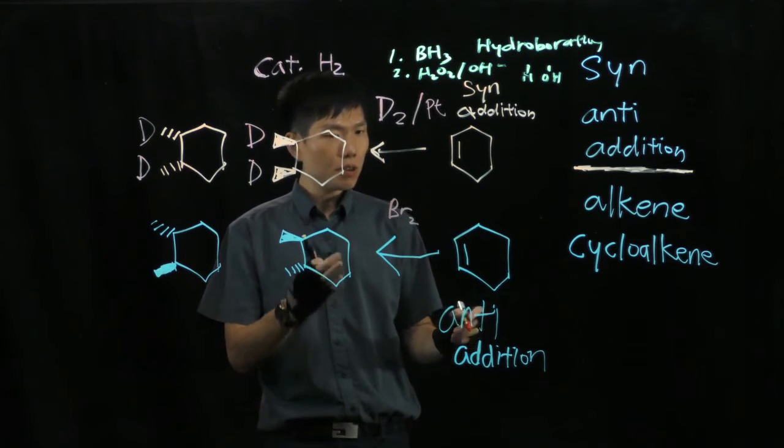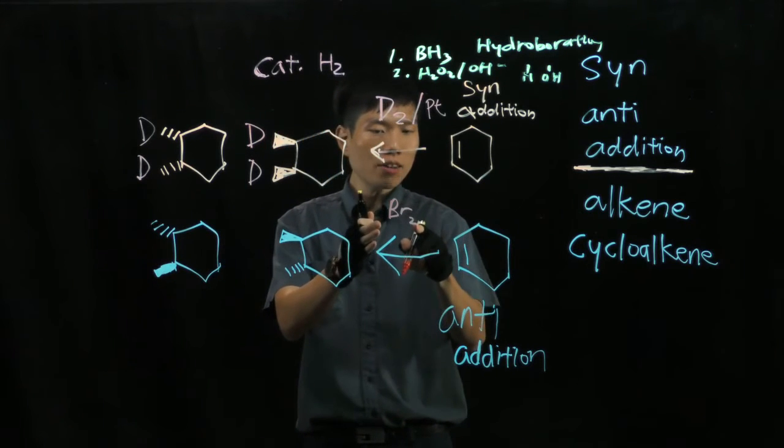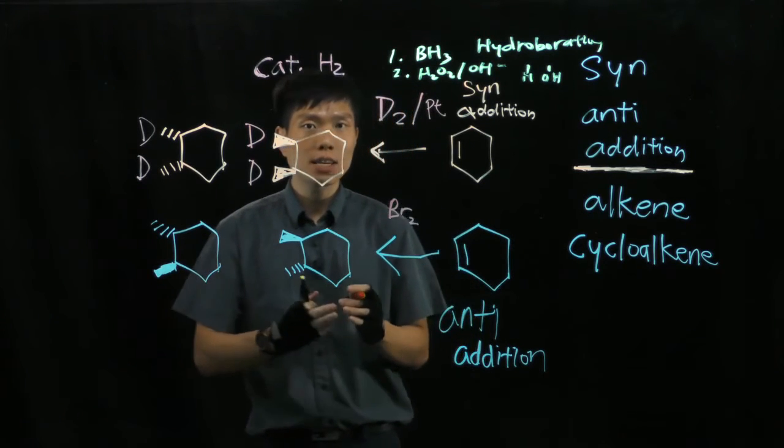And the reason is because when I have BR, it is an electrophilic addition, it will form a 3-member ring.